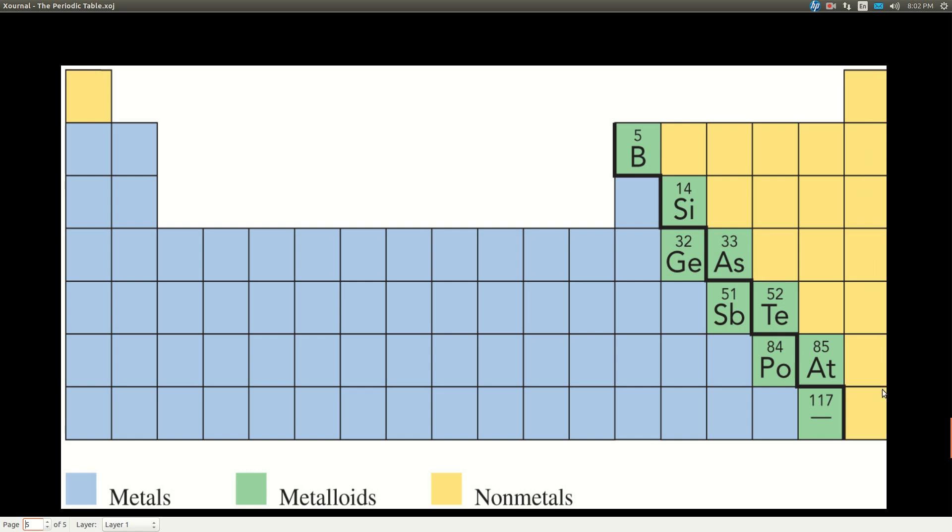These are usually, remember the noble gases? These are all gases, actually, room temperature. And the halogens differ. Some of them are gases. Some are liquid. One's a liquid. Some are solids. One is a solid.